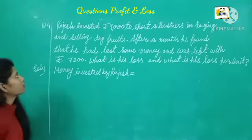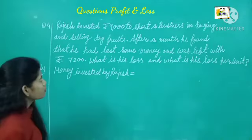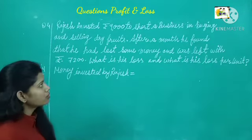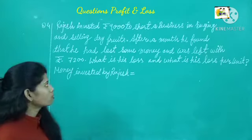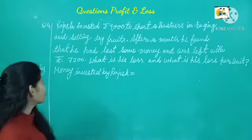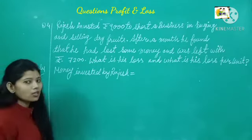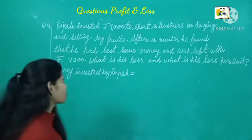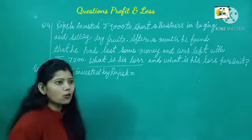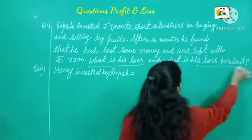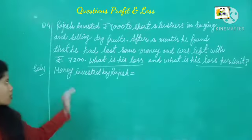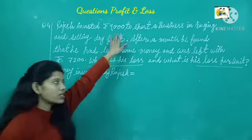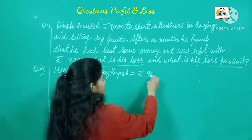Question number 4 is about Rajesh. Rajesh must take Rs. 9000 to start a business in buying and selling practice. After a month, he found that he had lost some money and was left with Rs. 7200. Now, what is his loss and what is his loss percent? Money invested by Rajesh in business is Rs. 9000.